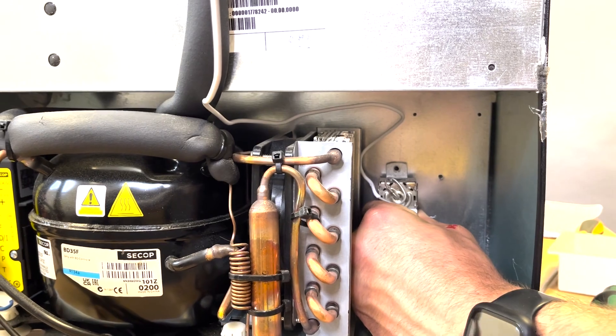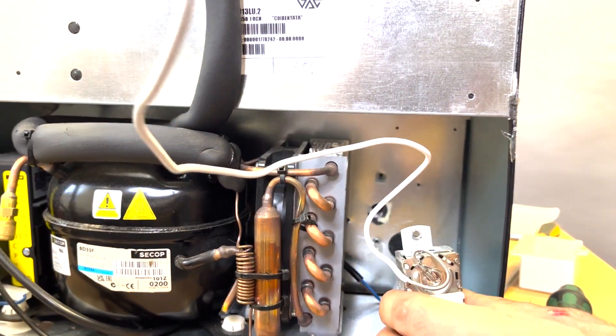Now pull the thermostat body away from the fridge. The dial will fall off inside the fridge.